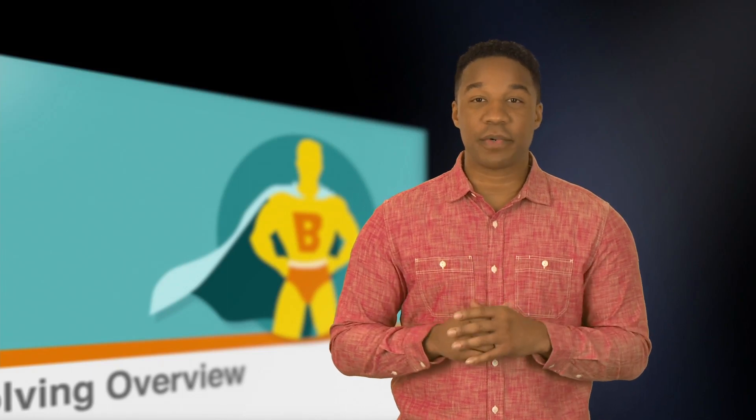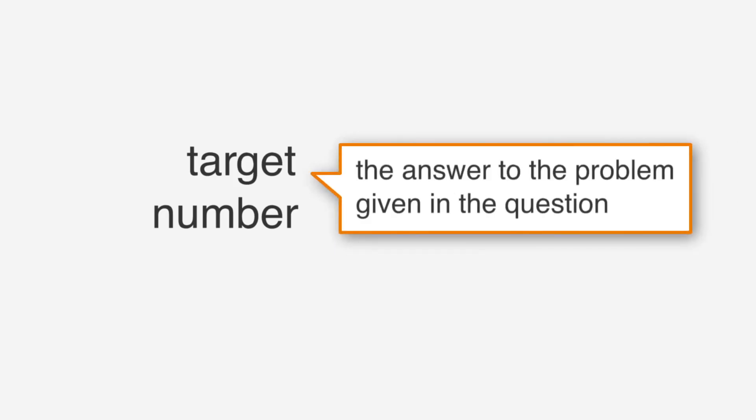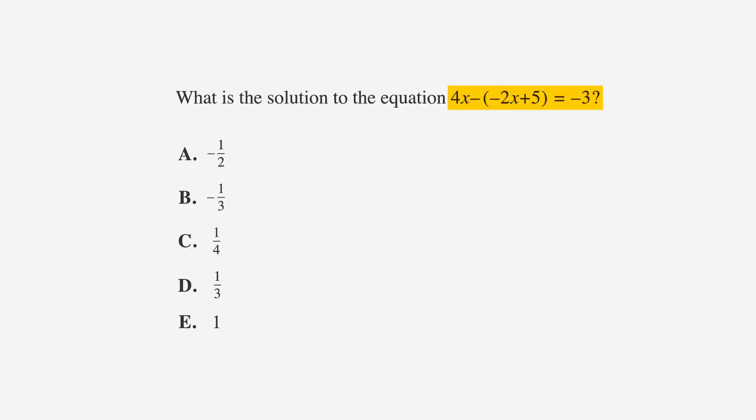The first rule of back-solving is that you need to identify a target number. The target number is the answer to the problem given in the question. In this problem, the answer to the equation is negative 3. If you plug in a value for x, you want the left side of the equation to work out to negative 3.